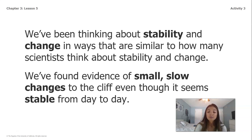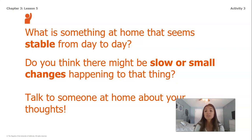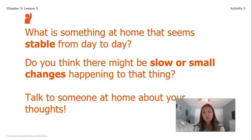We're going to learn a lot more in the next couple of lessons about stability and change, but before we move on to chapter four, I want you to think of some real-world applications. Remember, stable means something that seems like nothing's changing. What is something at home that seems stable from day to day? Do you think there might be slow or small changes happening to it and why? It could be something like your backyard, concrete, a table in your house — really anything you can think of.